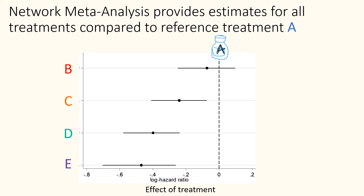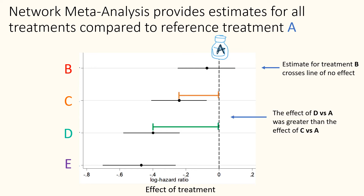The NMA results can be presented for each treatment compared with a reference so that we can easily compare them. Here, B, C, D and E are compared to A for mortality. The treatment effect for B crosses the line of no effect, meaning we cannot say that treatment B reduces the risk of mortality compared with treatment A. Treatment D was more effective at reducing mortality than treatment C. Treatment E was the most effective at reducing mortality.